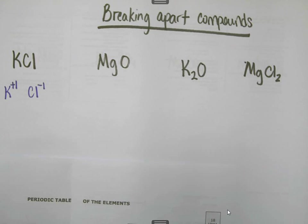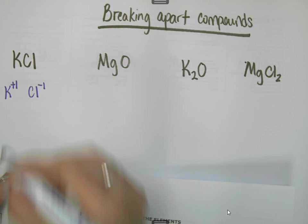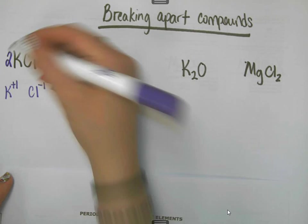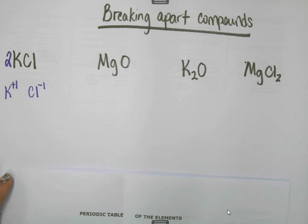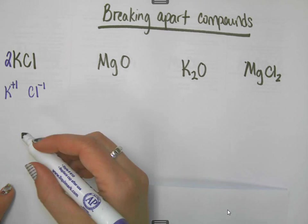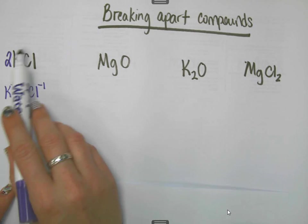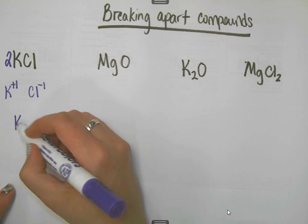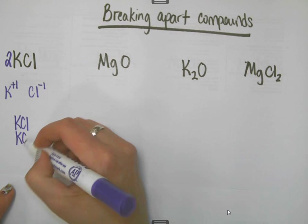So KCl would break up into K plus 1 and Cl negative 1. Now, sometimes in our reactions, you'll see, like in a balanced equation, a coefficient in front of it. So if you would see something like 2 KCl, what that means is you have 2 of this whole group.